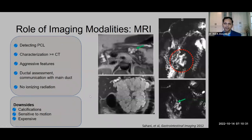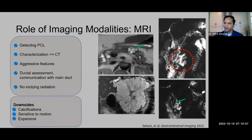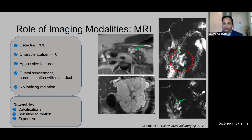MR is another excellent modality for characterization of cystic lesions — equal to or better than CT at identifying aggressive features such as internal septations and mural nodularity. It is the best modality for detecting pancreatic cystic lesions and for identifying ductal features including ductal obstruction, dilation, or communication between a cystic lesion and the main pancreatic duct. It has no ionizing radiation, making it ideal for long-term imaging follow-up. Downsides include inability to detect calcifications as well as CT, sensitivity to motion, and relatively higher cost.